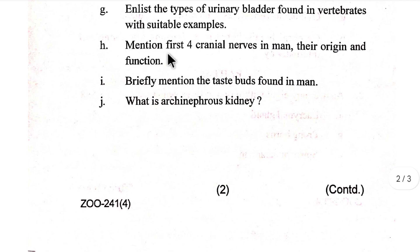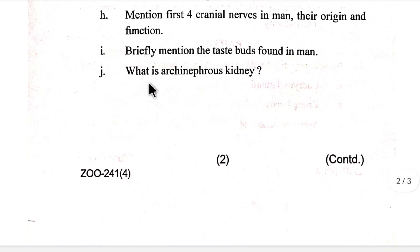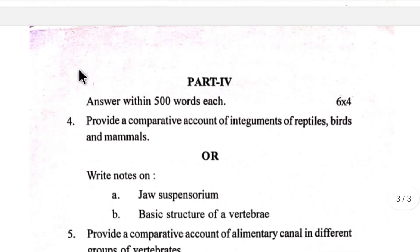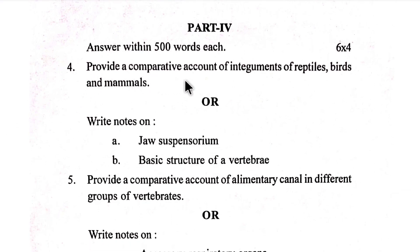List the types of urinary bladder found in vertebrates with suitable examples. Mention functions of cranial nerves in man — their origin and function. Briefly mention the taste buds found in man and their function. What is archinephros kidney?